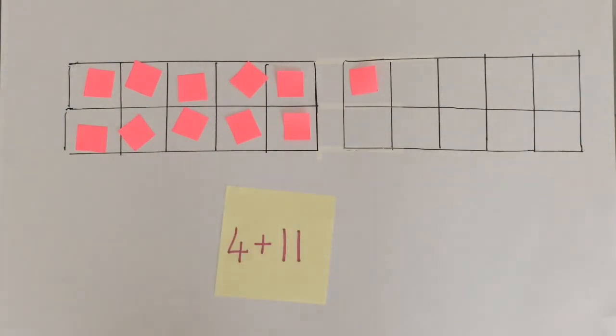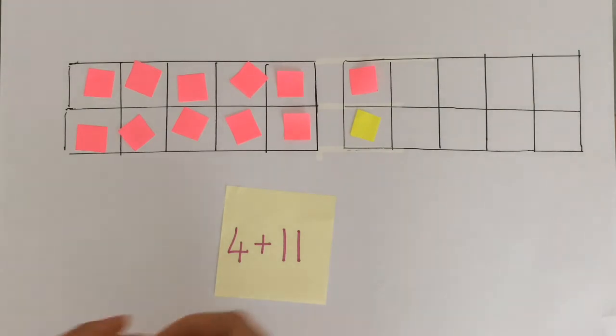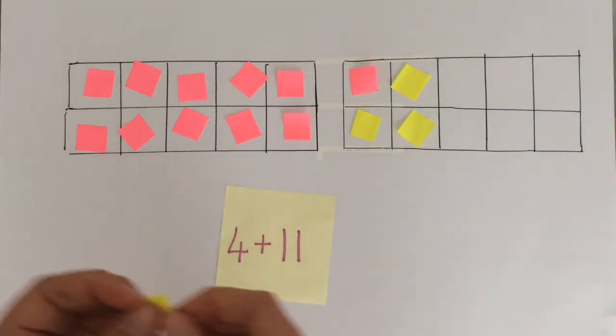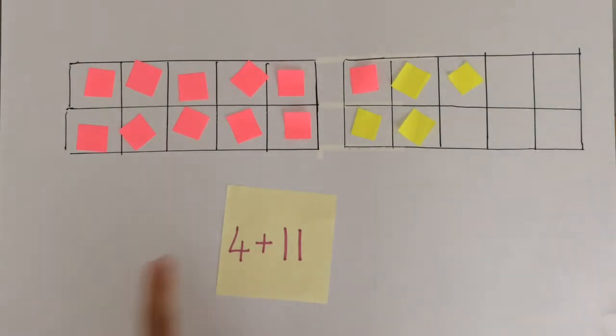So we've got 11 and now we're going to count on 4 more. 1, 2, 3, 4. So now we can see that we've got 11 and 4. So let's count them all together.